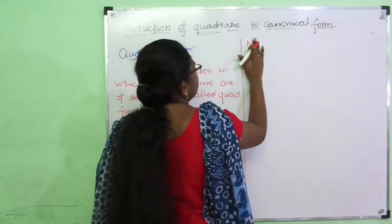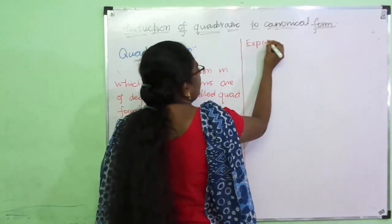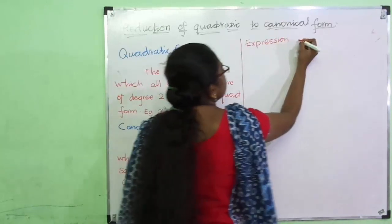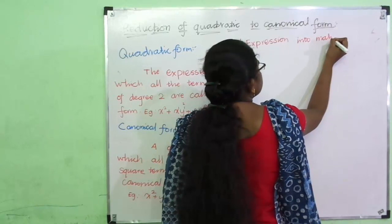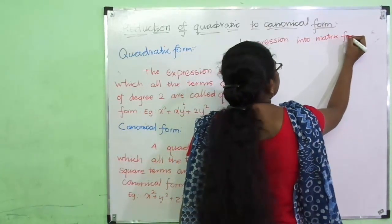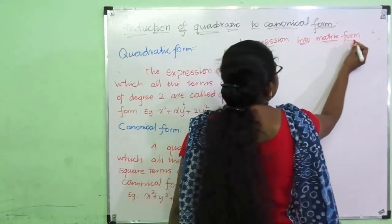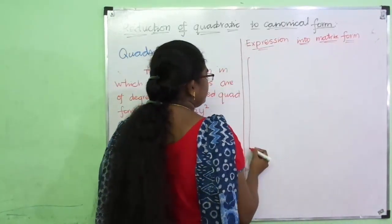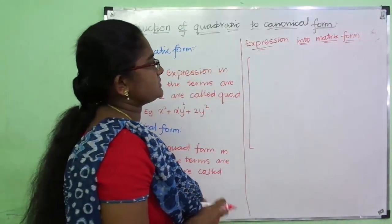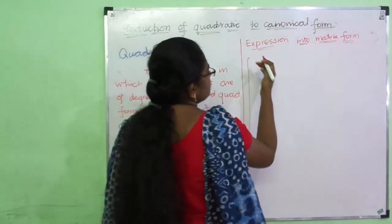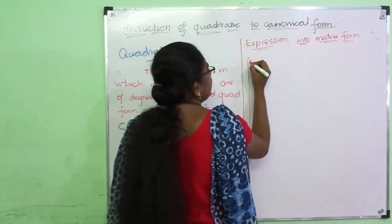Now let's see how we can write the expression into matrix form. In the question there will be an expression and we have to write the expression in the matrix form. To write the expression in matrix form, this will be the general term.